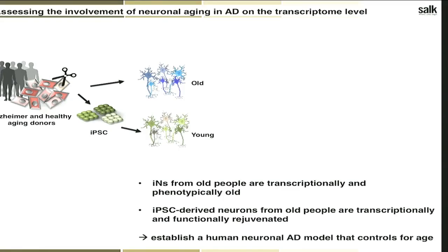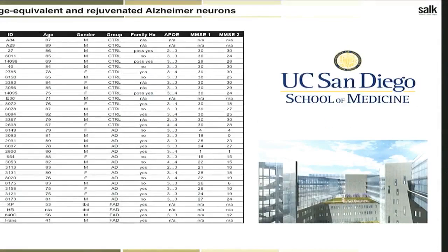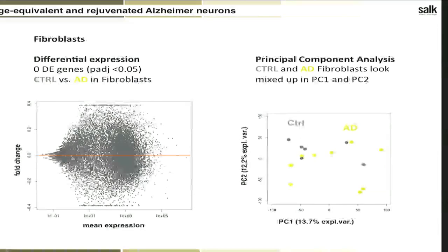We are establishing a human neuronal AD model that controls for age, using RNA-seq to analyze age-dependent and age-independent AD gene expression, and comparing this to normal aging genes. Starting from a cohort of about 30 patients and controls from the Alzheimer's Disease Research Center at UCSD, we first looked into fibroblasts by RNA-seq. Unsurprisingly, comparing AD against control fibroblasts showed absolutely no significant differential expression — Alzheimer's disease is not primarily a disease of the skin, and PCA showed no strong separation.